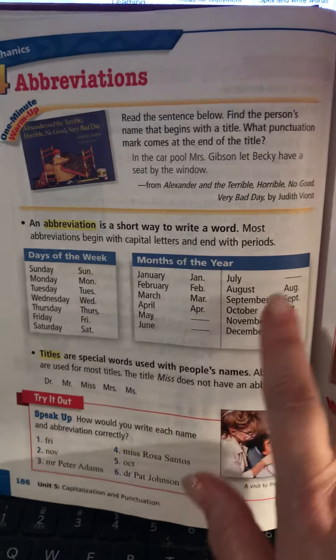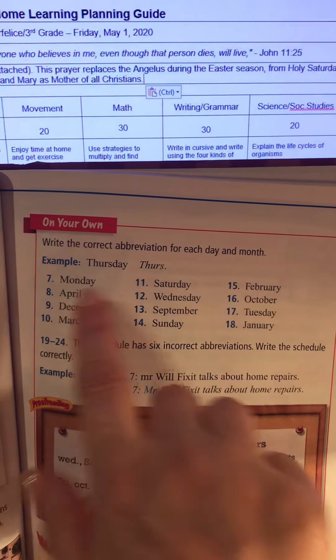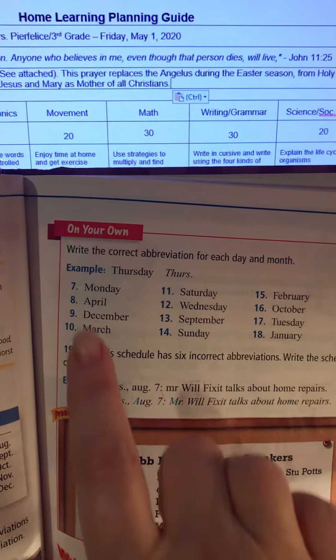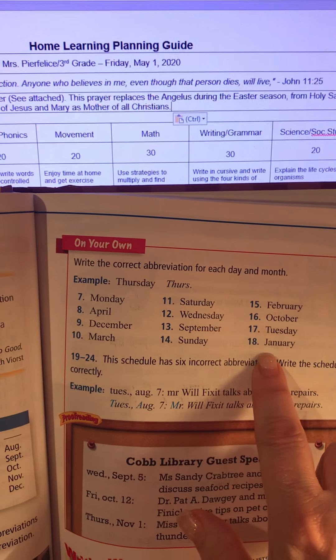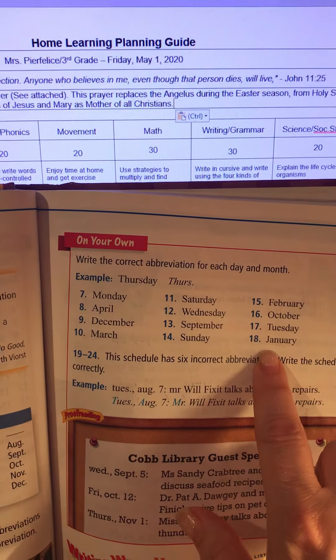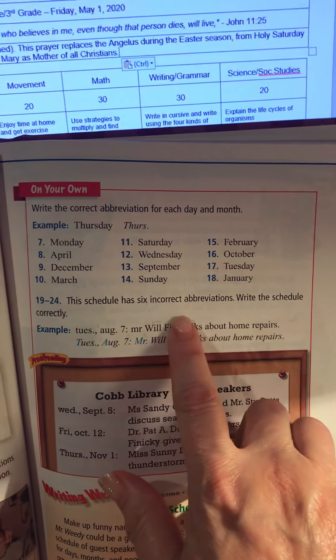Your assignment will be done on your own. You will write the correct abbreviation for each day and month — numbers four through seven, all the way to eighteen. Remember to capitalize and put a period if needed. For numbers nineteen to twenty-four, there is a schedule — a schedule for people who will be guest speakers at a library.